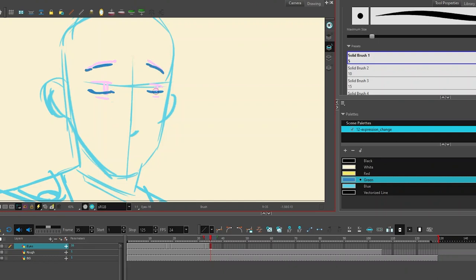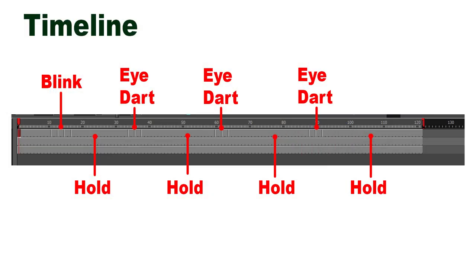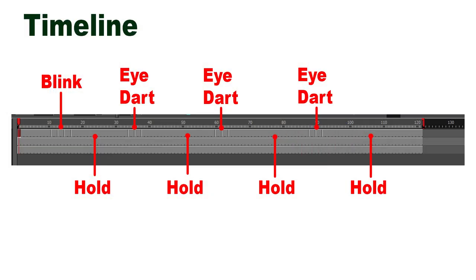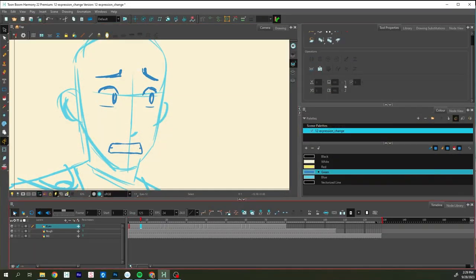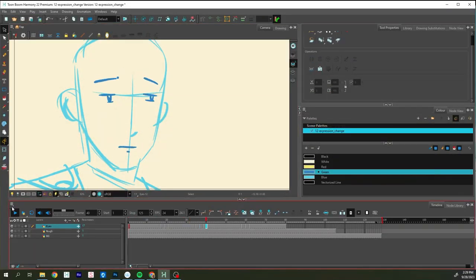When it comes to putting in an eye blink or an eye dart, I tend to use two frames of animation and those are typically on twos. So think of that as two drawings times two — that's four total frames done on two drawings. I like to leave a pretty large hold, maybe about 10 frames, and then later I'll go back and watch it and see if it actually makes sense.